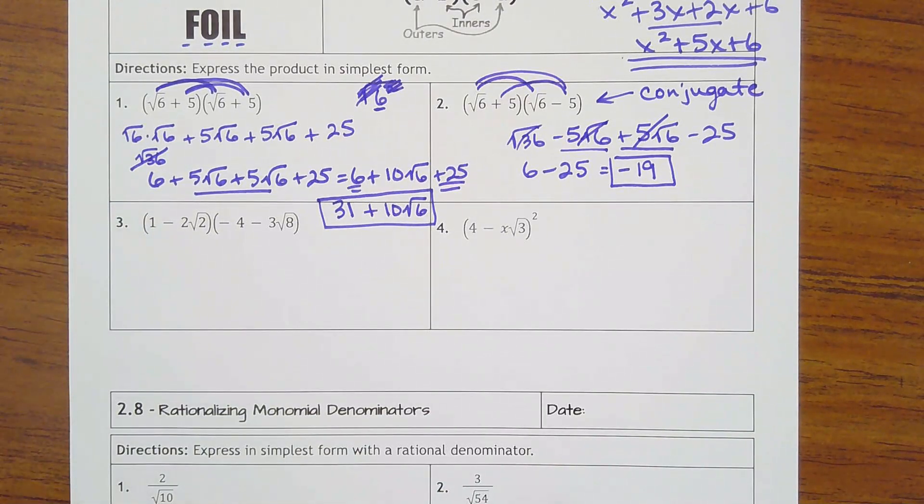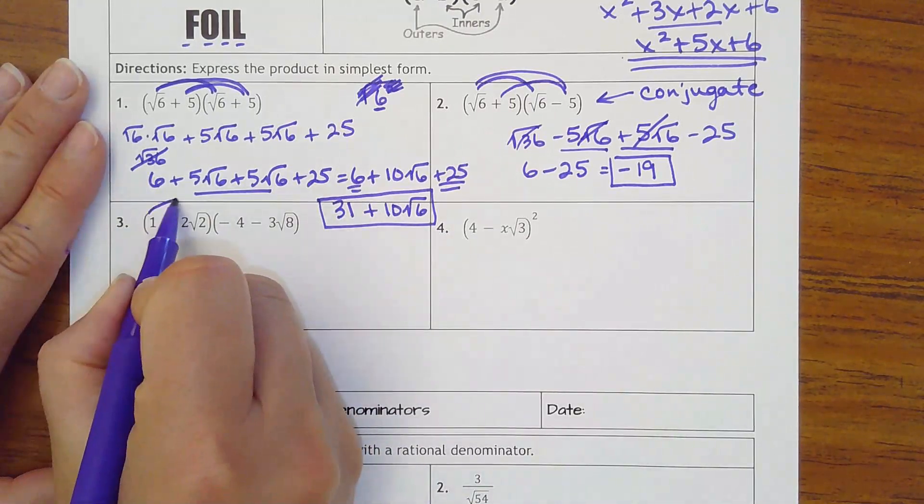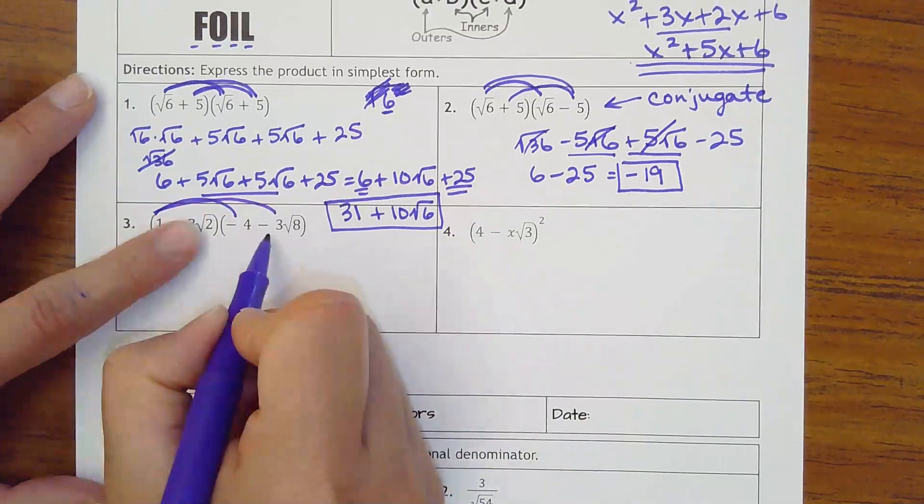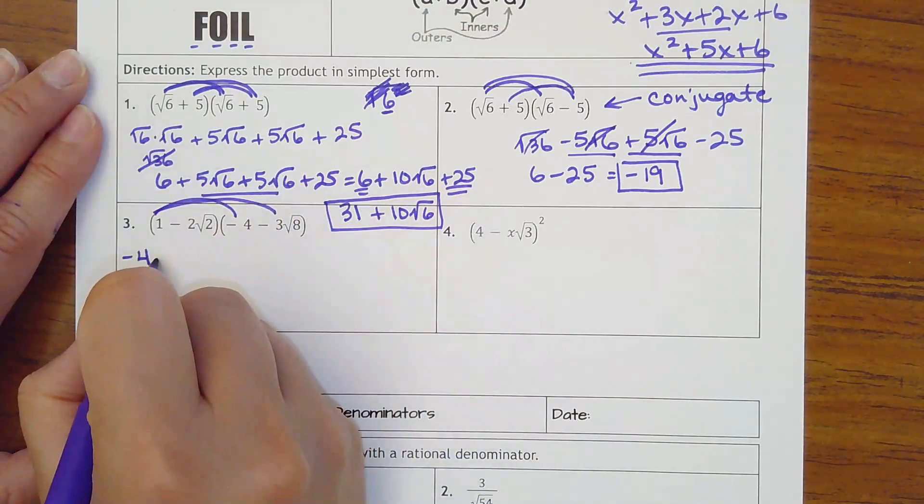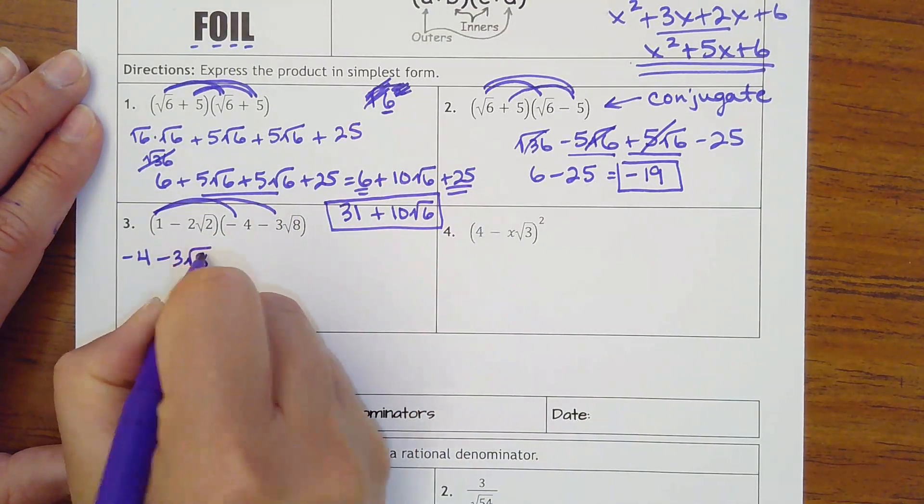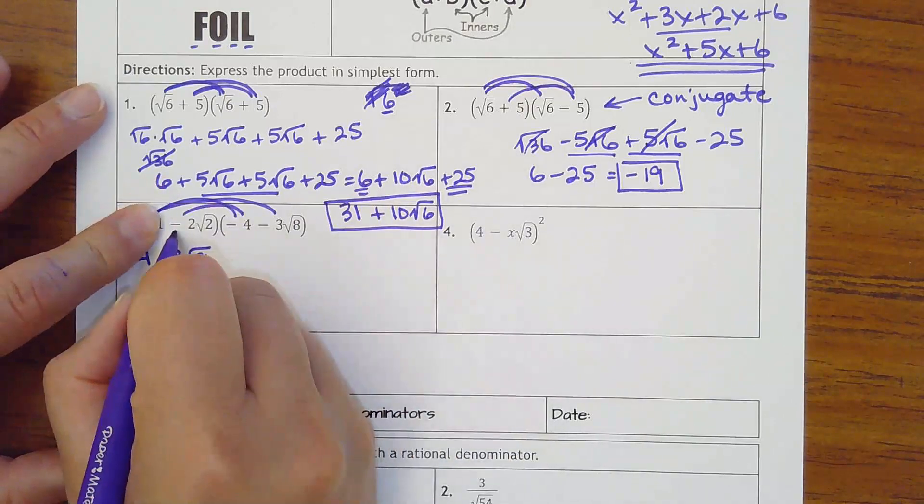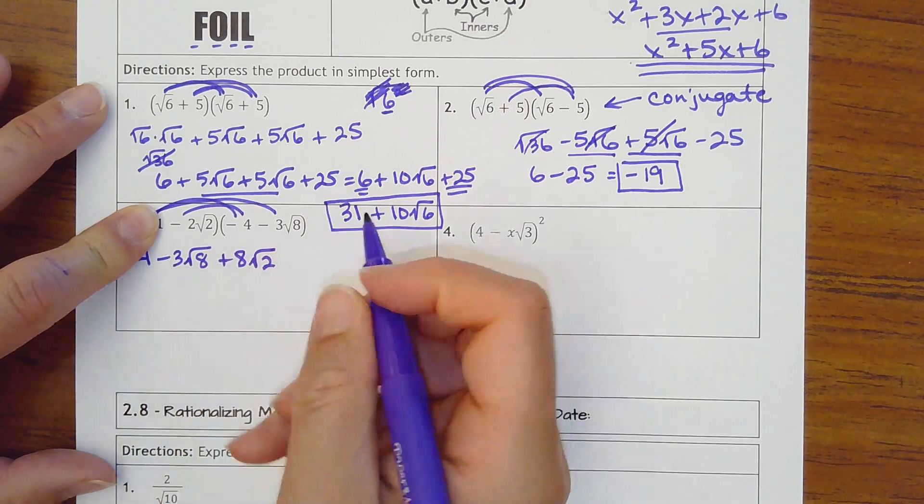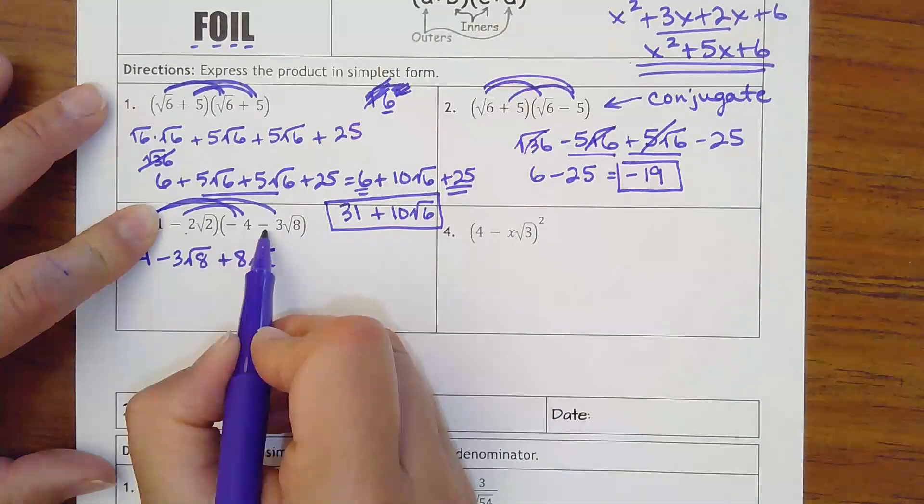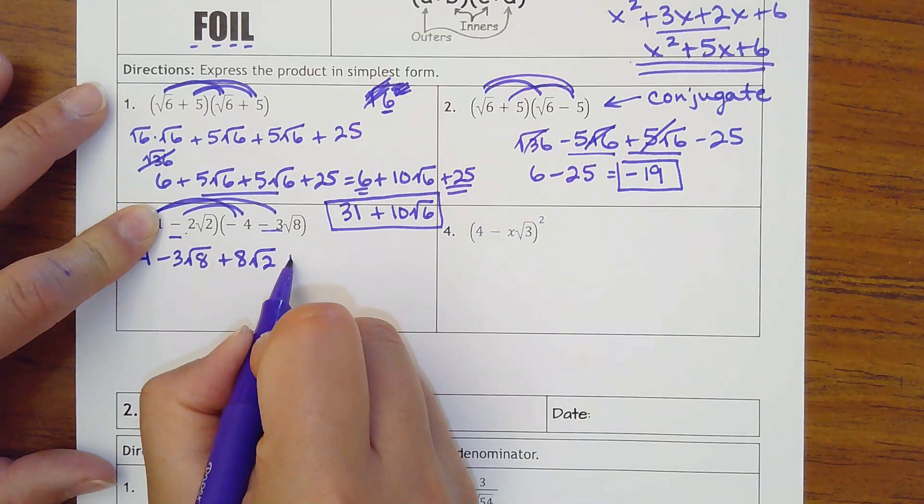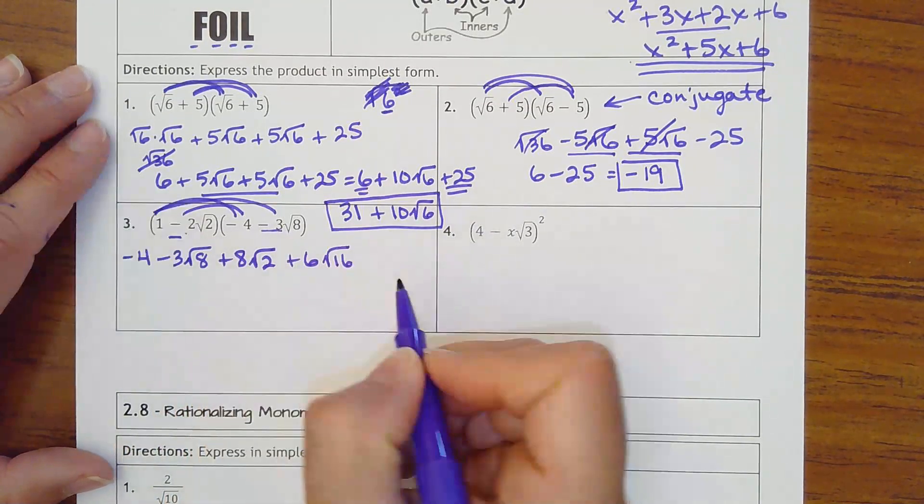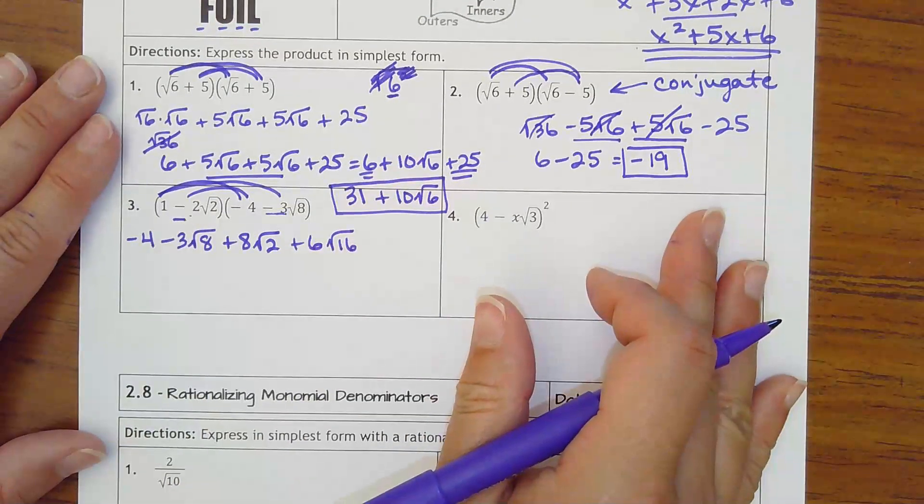Number 3. Looks scary. It's really not. We're going to foil it. So 1 times 1 times negative 4 is negative 4. Outers. 1 times negative 3 square roots of 8 is still negative 3 square roots of 8. Inner. Negative 2 times negative 4 is positive 8 square roots of 2. And last. Negative 2 times negative 3 is positive 6. We can multiply these. 2 times 8 would be square root of 16. All right. Let's simplify some stuff here.